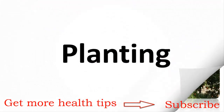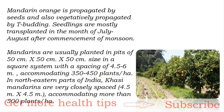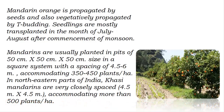Mandarin orange is propagated by seeds and also vegetatively propagated by tea budding. Seedlings are mostly transplanted in the month of July–August after commencement of monsoon. Mandarins are usually planted in pits of 50 cm × 50 cm × 50 cm size in a square system with a spacing of 4.5 to 6 m, accommodating 350 to 450 plants per hectare. In northeastern parts of India, Khasi mandarins are very closely spaced at 4.5 m × 4.5 m, accommodating more than 500 plants per hectare.